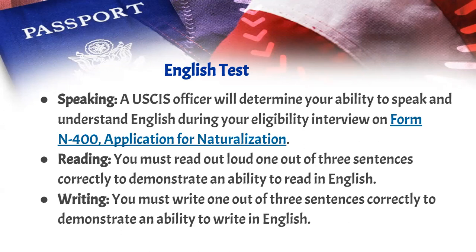The last part is writing. You must write one out of three sentences correctly to demonstrate your ability to write in English. They will give you an example sentence, such as 'George Washington is the first president of the United States,' and you have to write that correctly. If your spelling is a little off, they may give you a second sentence. You have three chances for writing as well. There is limited vocabulary you can study for reading and writing — they tell you what those words are, and I will show you the resources you can use.